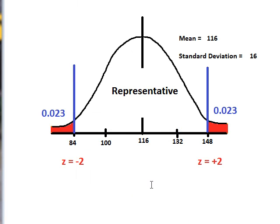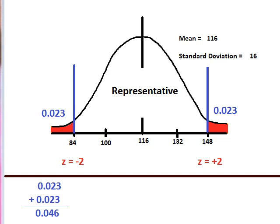So the proportion of people that we might randomly pick who would not be representative: we have 0.023 for those people who are two standard deviations above the mean, and we have 0.023 for those people who are two standard deviations below the mean. If we add up those two proportions, 0.023 plus 0.023, our combined area, these two red areas where we would say someone is not representative, is 0.046.